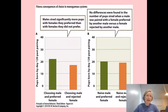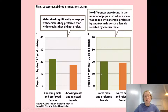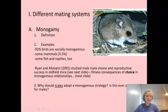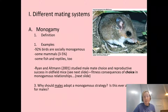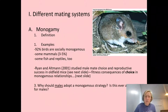This suggests males are choosing females that are compatible with them — females that help increase their reproductive success together. It wasn't simply that the chosen female was a better female overall, but rather about compatibility. This raises the question: why would males ever adopt a monogamous strategy, given that mating is not very costly and mating with many females could produce more offspring?